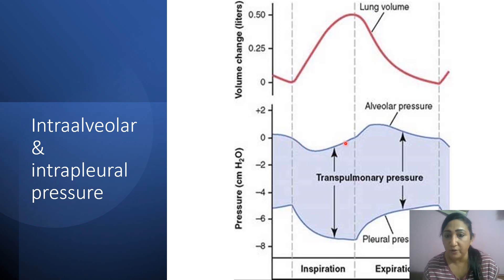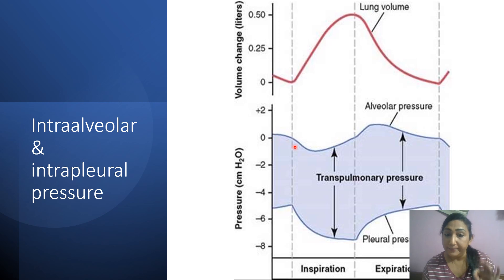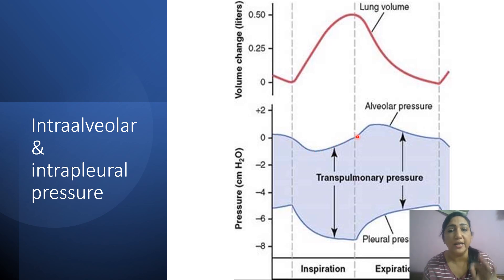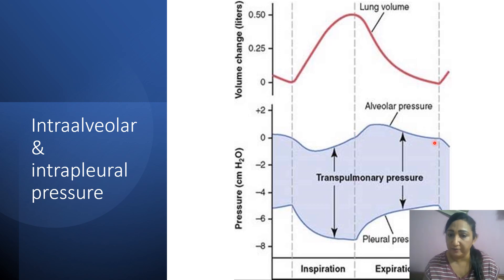This is the intra-alveolar pressure. At the beginning of inspiration it is zero; in the middle of inspiration it goes negative; again it comes to positive at the end of inspiration. During expiration it becomes positive and comes back to zero at the end of expiration.